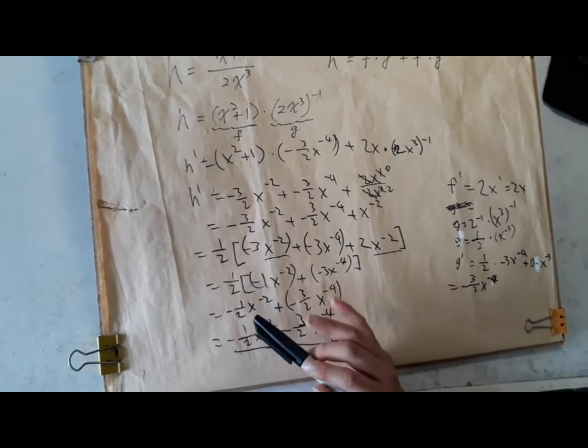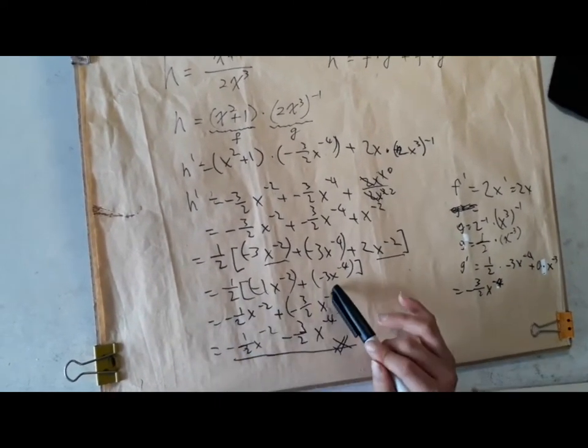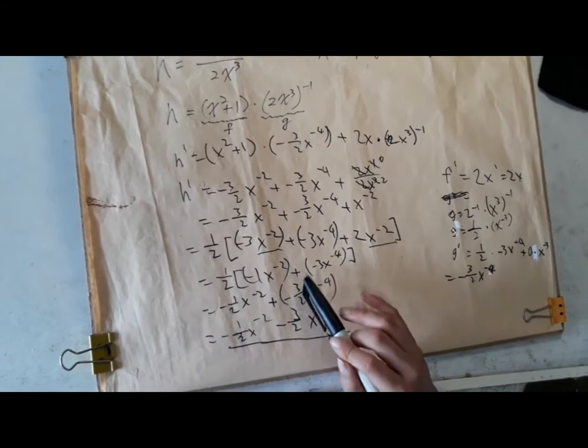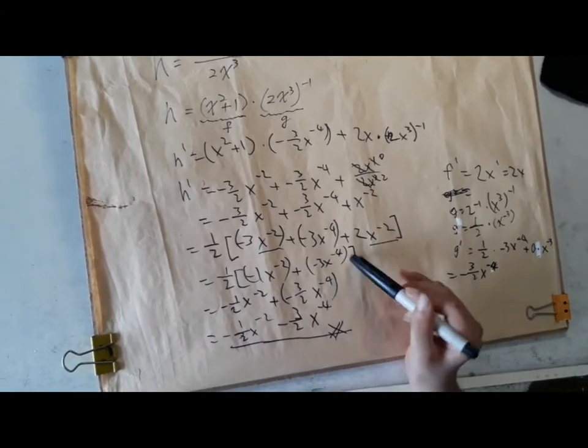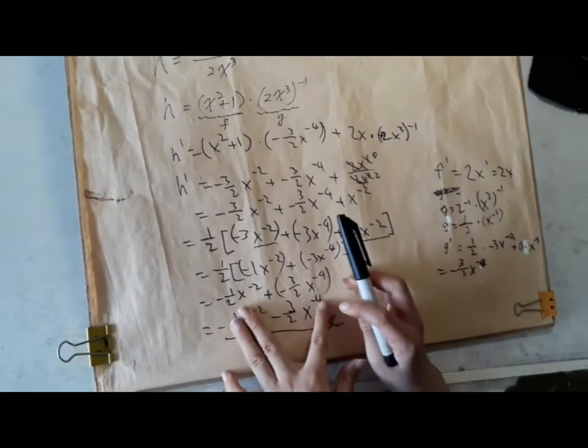So negative 1 times a half is negative a half. Negative 3 times a half equals negative 3 halves. And so when you write the whole spreading down, it's gonna look like this.